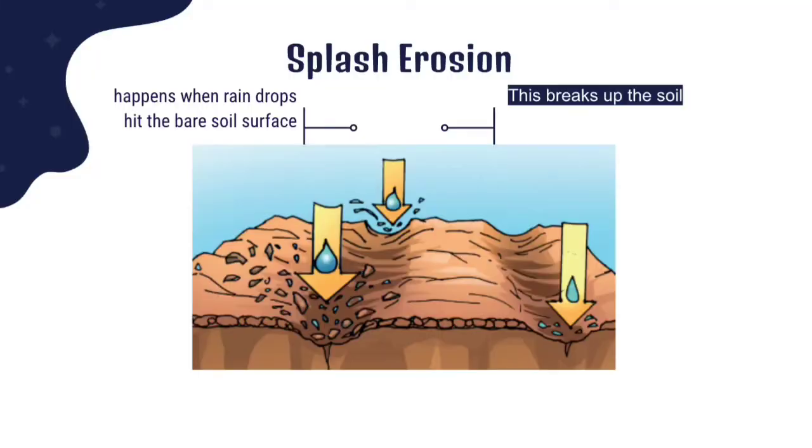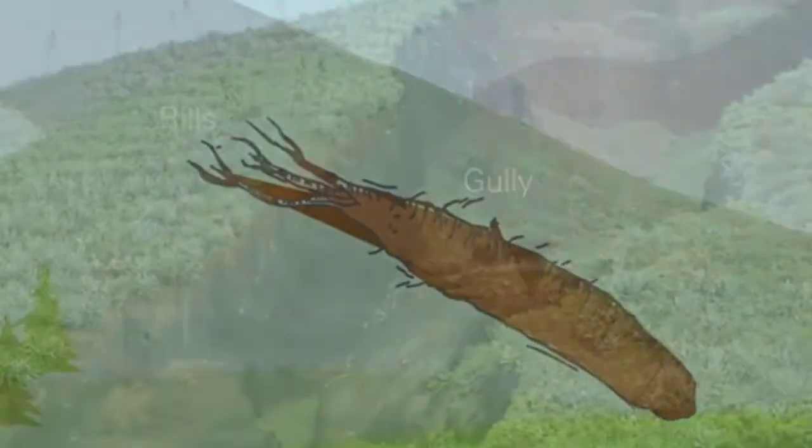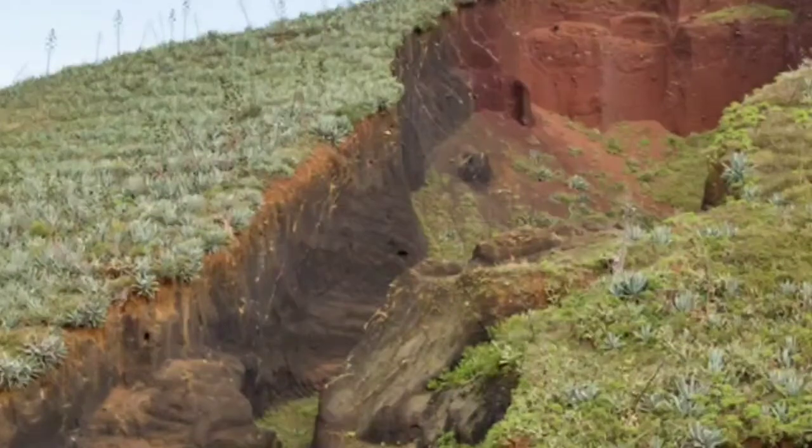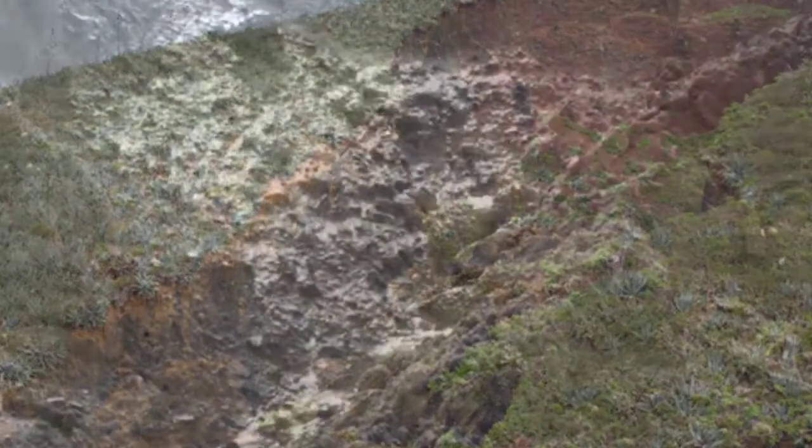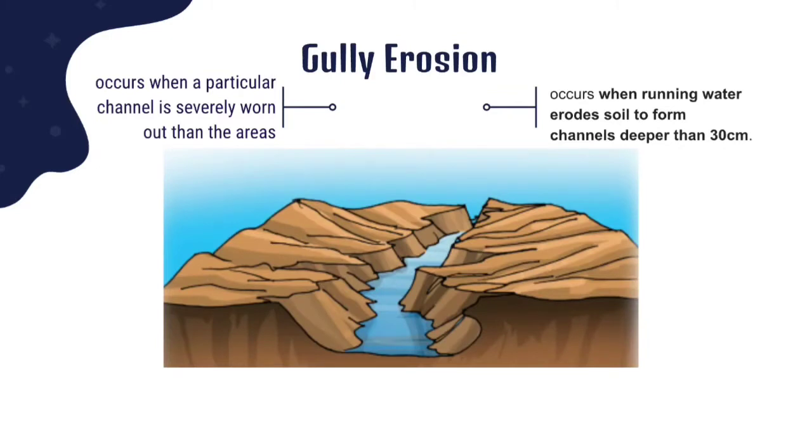Now we have gully erosion. Just like the name gully, it occurs when a particular channel is severely worn out than the area surrounding it, so it causes a gully. This occurs when running water erodes soil to form channels deeper than 30 centimeters. This is exactly what gully erosion looks like.